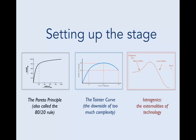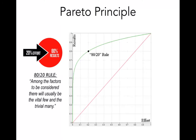Starting with the Pareto principle, as illustrated on the slide, there is a non-linear relationship between the effort and the results that come from applying those efforts. Typically, most of the results come from only a subset of the contributing factors. This can be codified in the 80-20 rule: among the factors to be considered there will usually be a vital few and a trivial many.